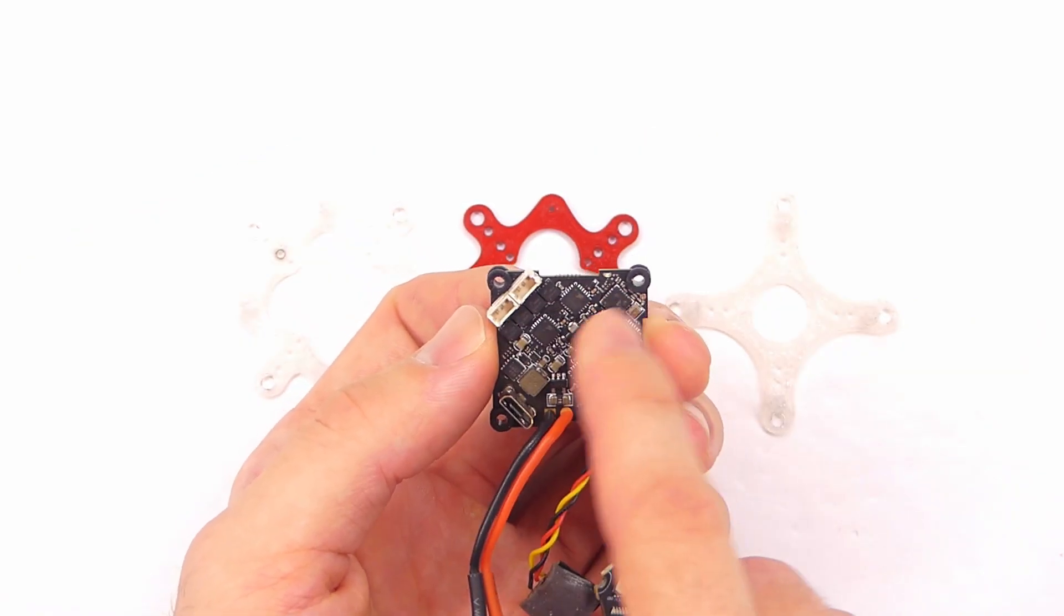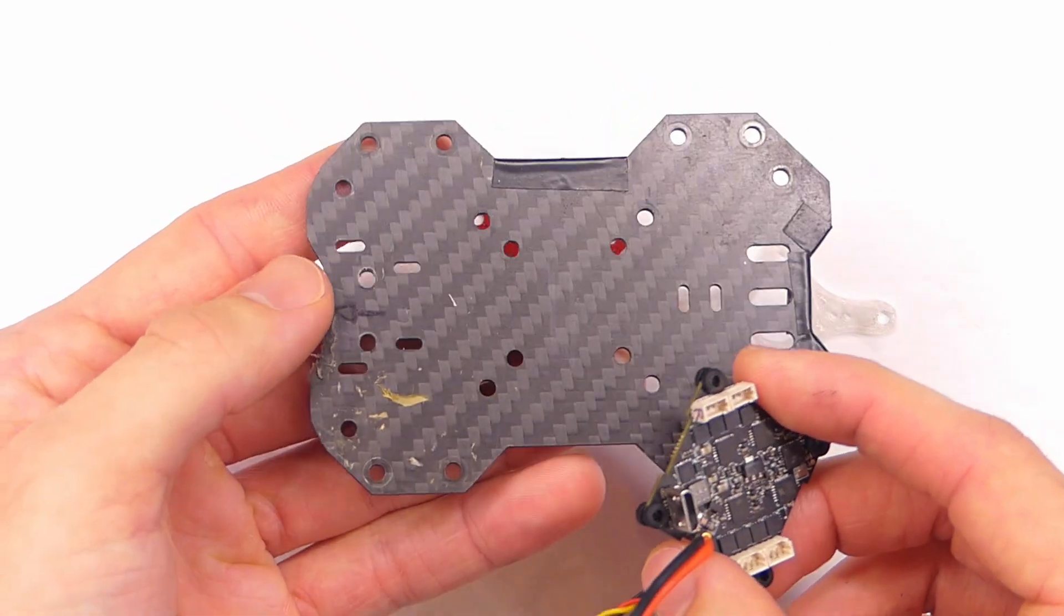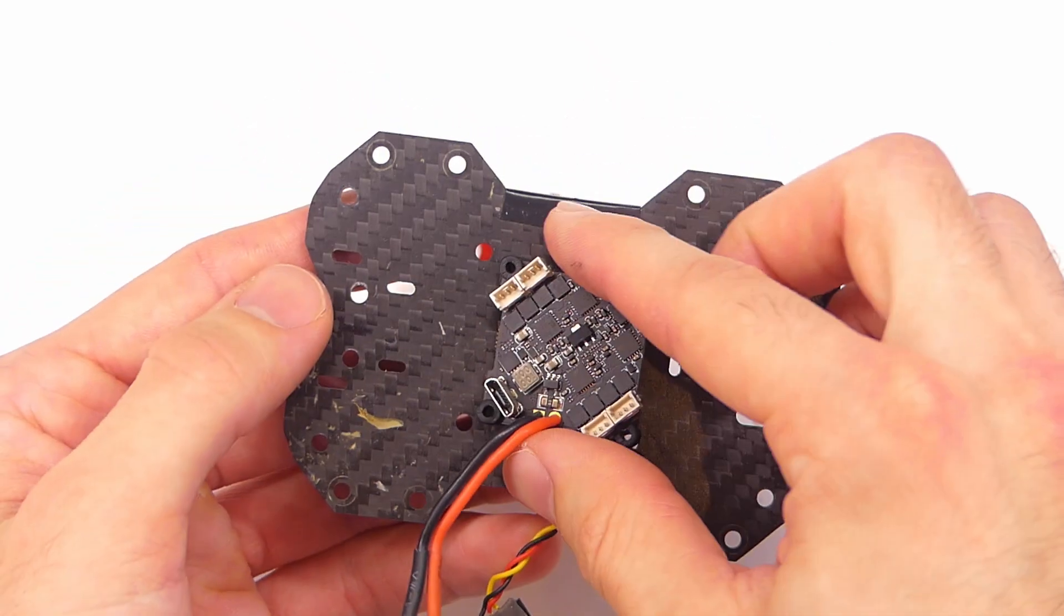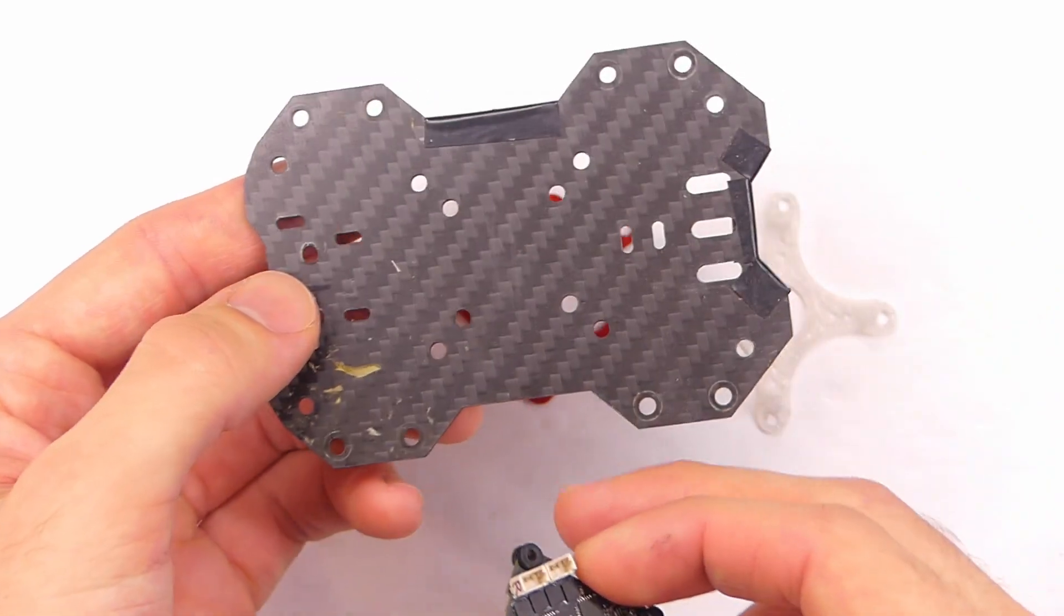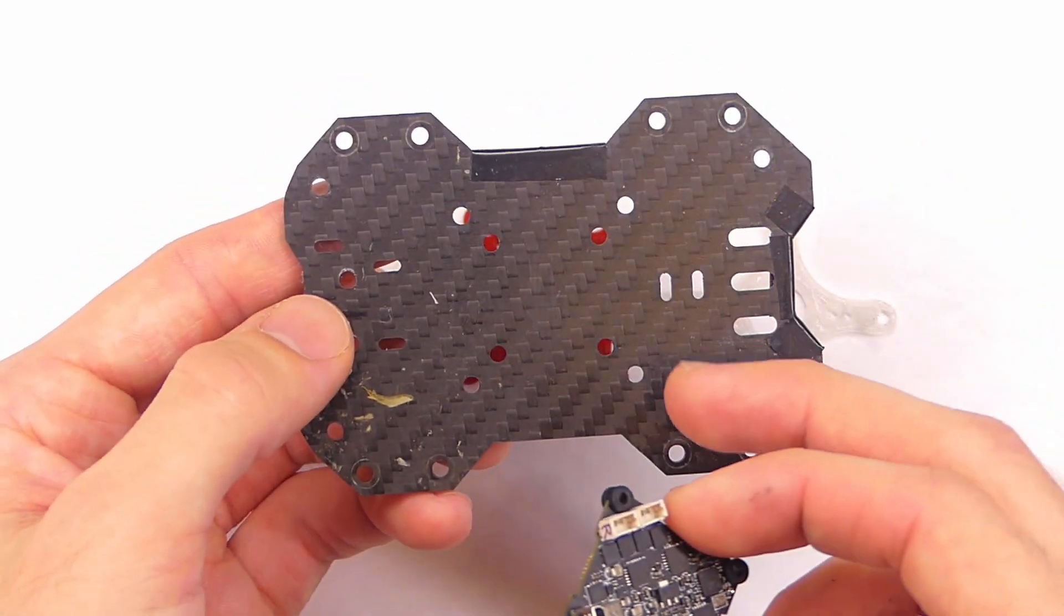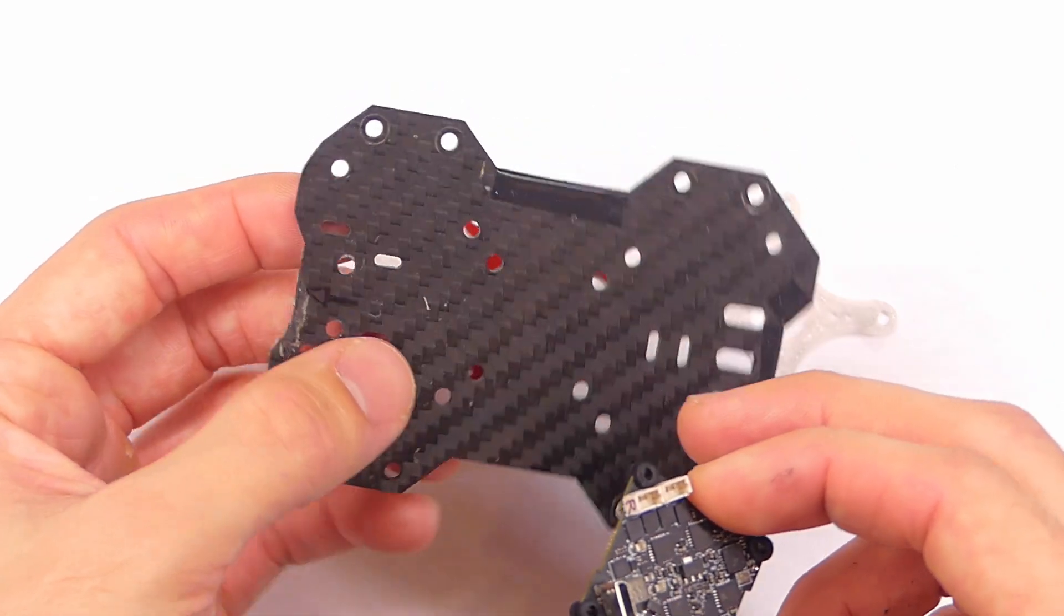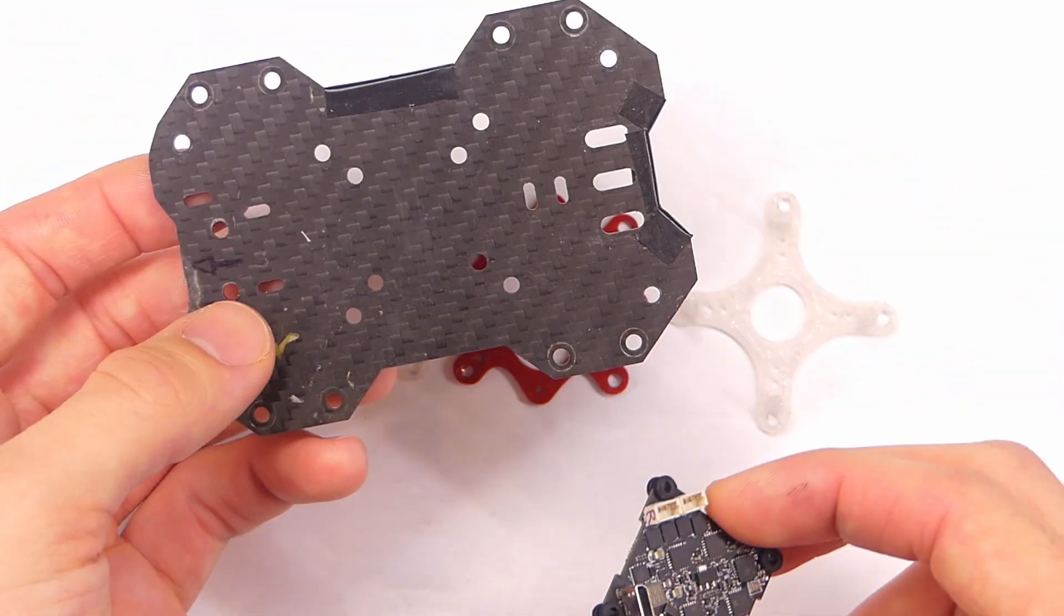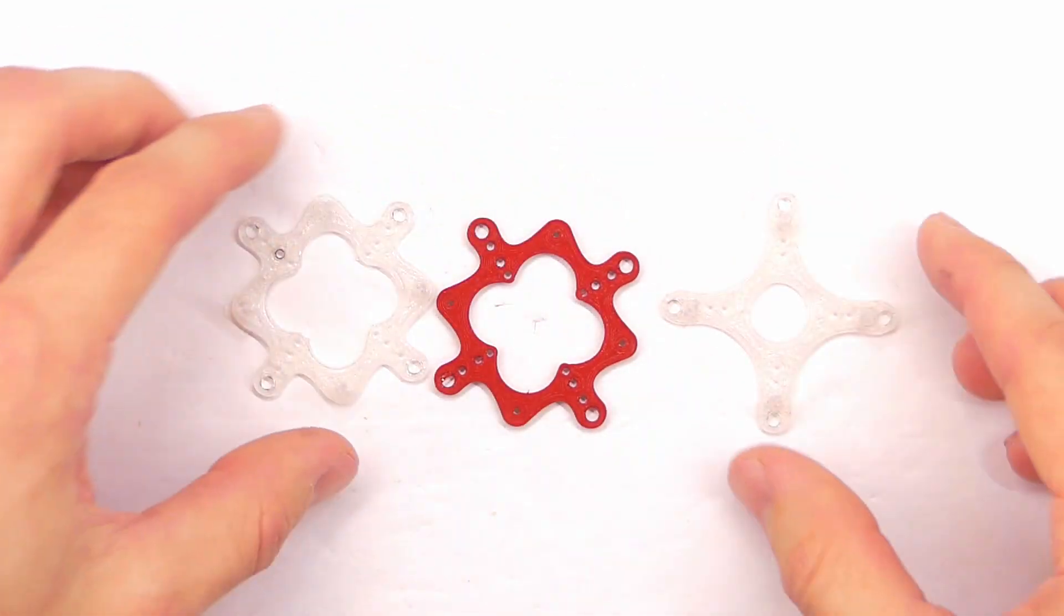If you want to put an all-in-one flight controller board on a quadcopter that does not have holes for that particular board, well, you can drill your own holes, but that could be kind of problematic and kind of messy, and maybe you don't want to screw up your frame or something. So what you can do is put an adapter plate in there. And without further ado, this is what I came up with.